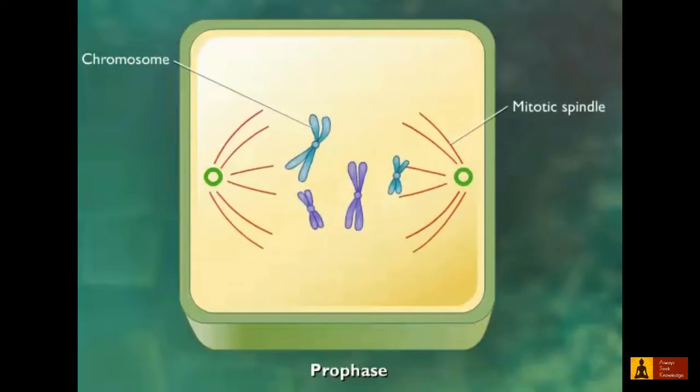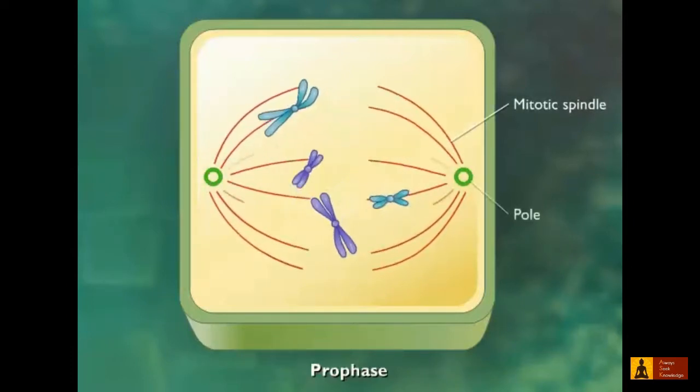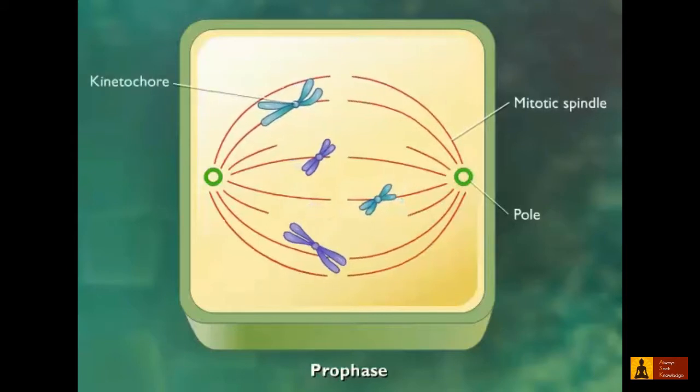Mitotic spindles, which are made of microtubules, begin to form between the poles, and kinetochores begin to mature and attach to the spindles.